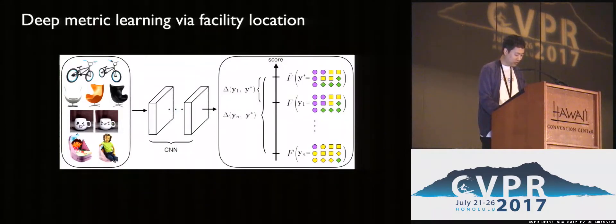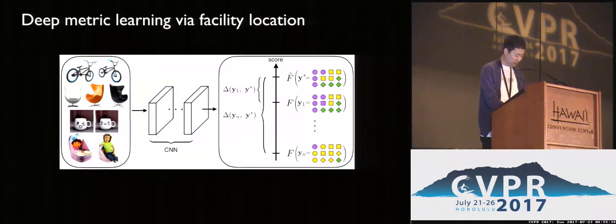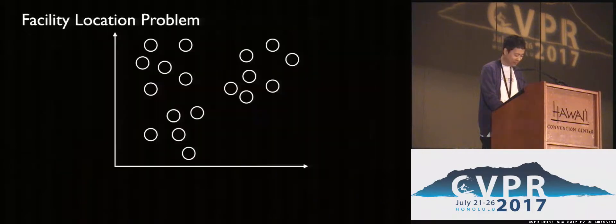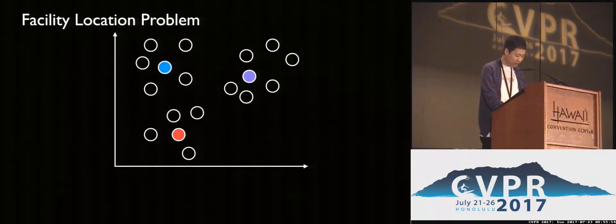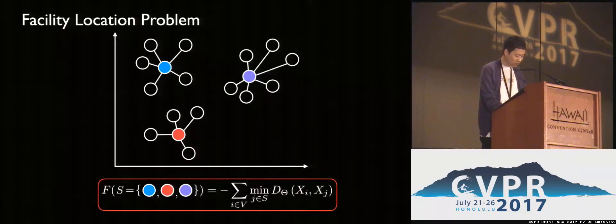The structured margin delta term penalizes different clustering assignments proportional to the clustering error measured in NMI. Specifically, we make use of a set function that captures the loss of facility location, which measures how well a set of prototypes — one for each cluster — represents the entire data. A set of prototypes are passed as an argument to the function, and the function sums up the travel distances of each data point to their nearest prototype or facility in the embedding space.